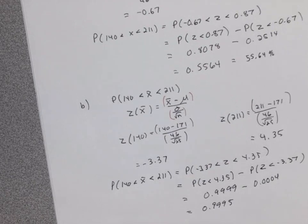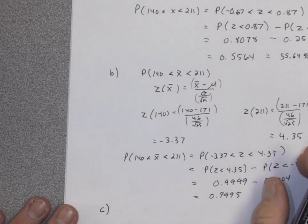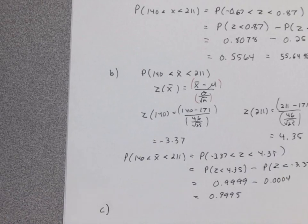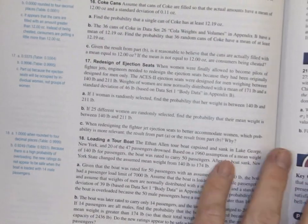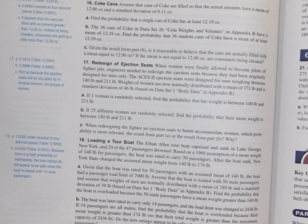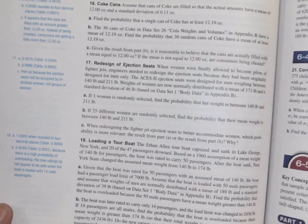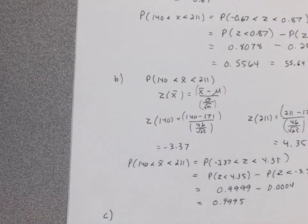That's about 99.96% — very inclusive for a group of 25. Part C asks which probability is more relevant when redesigning the ejection seat. Part A is more relevant because you're not putting 25 women in that seat at one time — you're only putting an individual in the seat. So A is better because it's the individual sitting there.